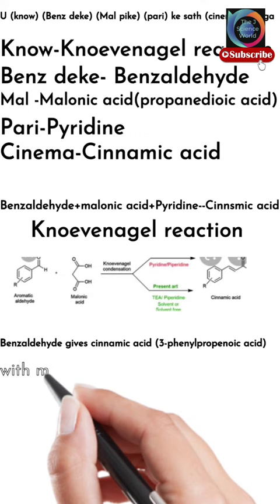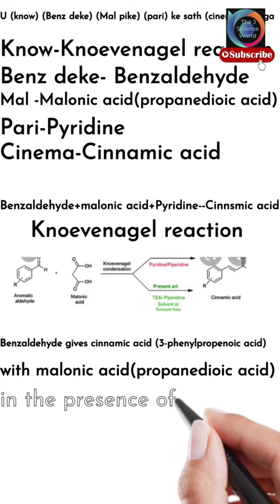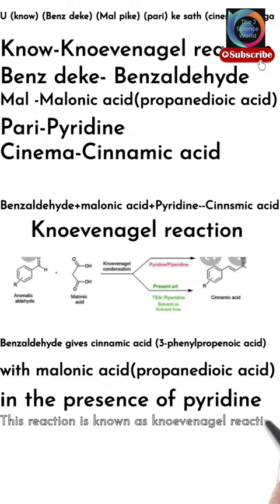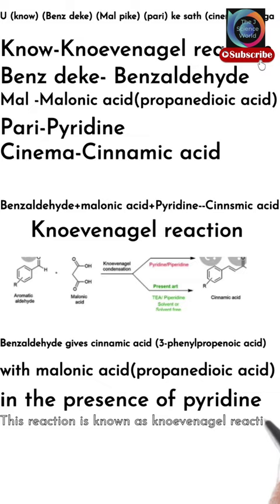We can also write this as: benzaldehyde reacts with malonic acid (propanedioic acid) in the presence of pyridine to give cinnamic acid, also known as 3-phenylpropanoic acid. This reaction is known as the Knoevenagel reaction. I hope it was clear to you — subscribe to our channel to watch such informative videos.